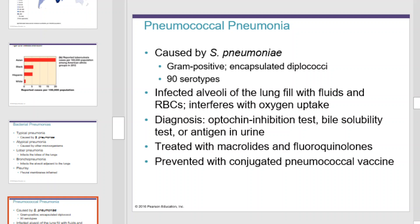Pneumococcal pneumonia is caused by S. pneumoniae, which is a gram-positive encapsulated diplococcus of one of 90 serotypes. Infected alveoli in the lungs will fill with fluid and red blood cells, which interferes with oxygen uptake. Diagnosis is accomplished using optochin inhibition tests, bile solubility tests, or antigens in the urine. It can be treated with macrolides and fluoroquinolones and prevented with conjugated pneumococcal vaccine.